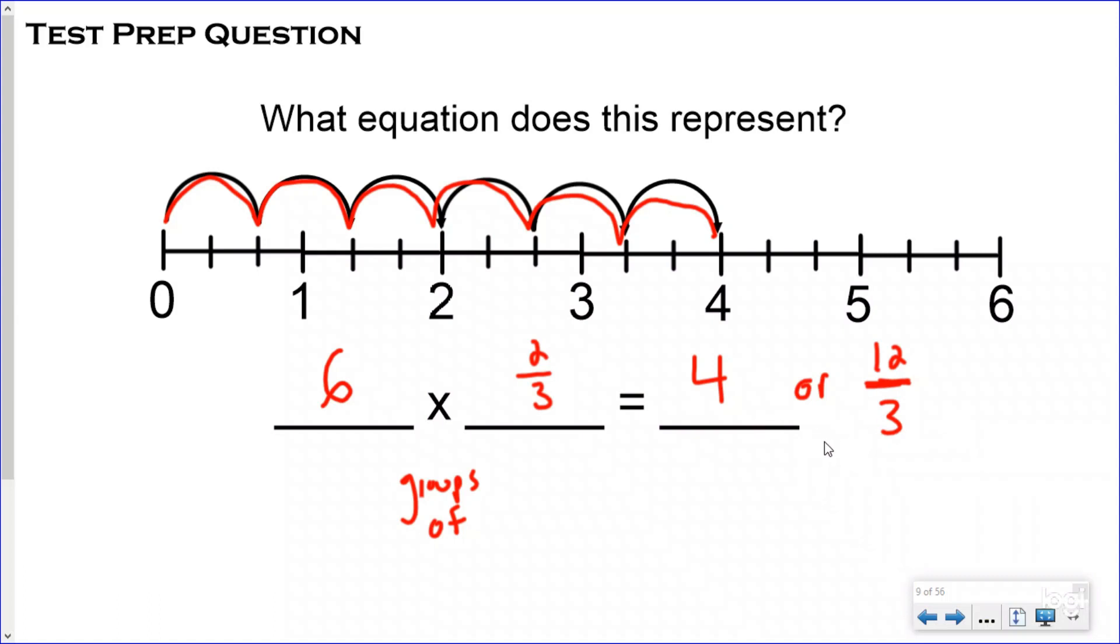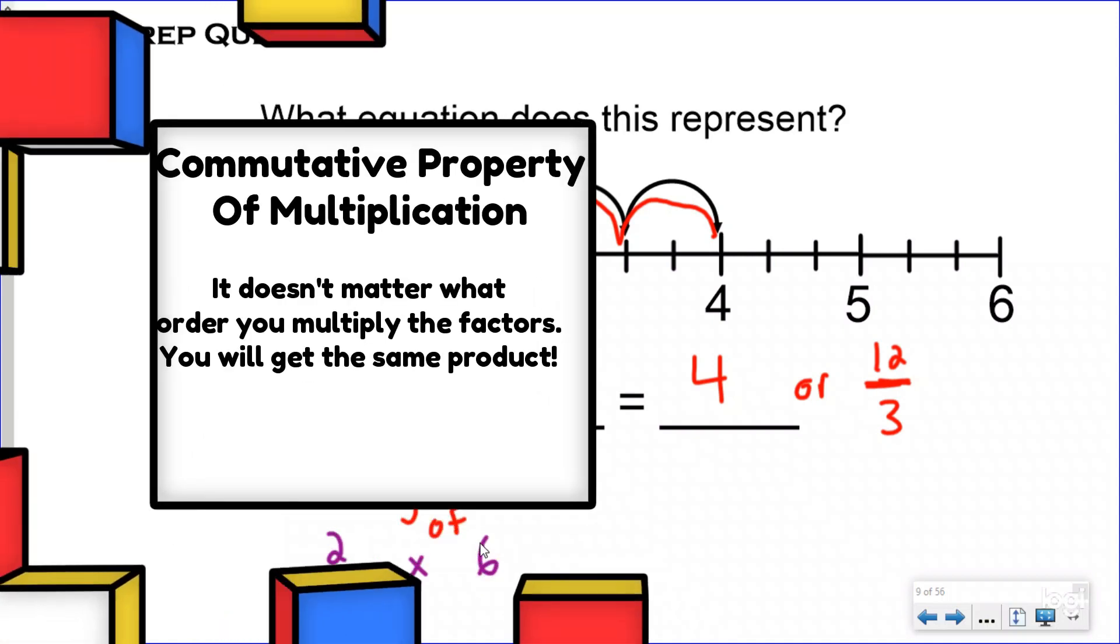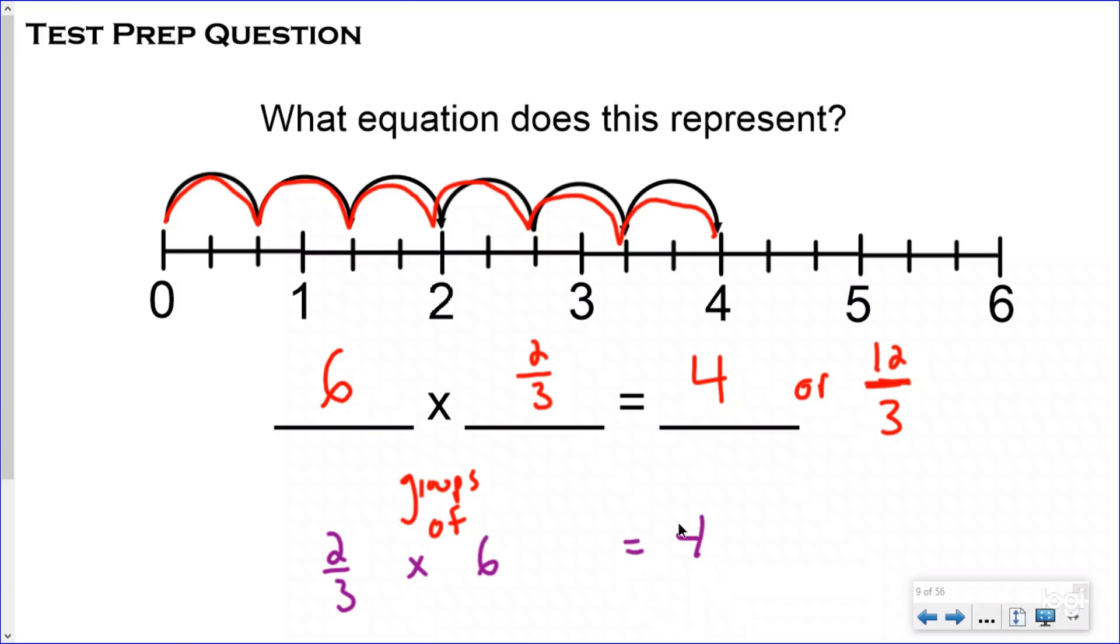Now, it's important that you know this times sign says groups of because some of you may have written 2/3 times six. Now, commutative property of multiplication tells me that I will still get my answer as four. And I, Dr. Bones, do not disagree with you there. However, the correct equation was six groups of 2/3, not 2/3 groups of six. You would read that multiplication problem a different way, which you should tune into our next lesson to help you understand that. But it is important that you know how to write the equation correctly and read it correctly. So even though 2/3 times six will still give you the same answer, that is not the correct equation shown by our visual model and our number line.